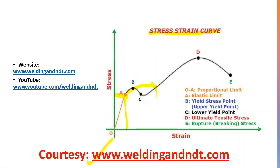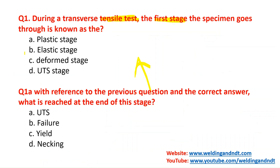After the elastic stage, the plastic stage initiates. In the plastic stage, the material deforms permanently — it will not regain its original shape. After the elastic stage, yielding starts. Yielding means the material cannot regain its shape after removal of the load. After some time, UTS — ultimate tensile strength — is reached, which is the maximum stress the material can sustain before breaking. So the answer to question 1 is: elastic stage.